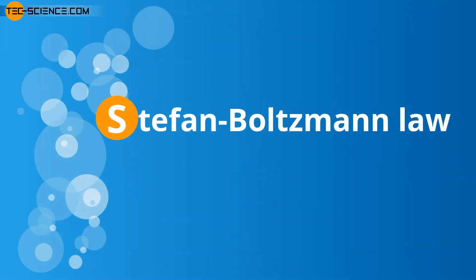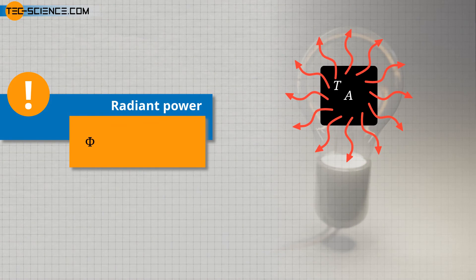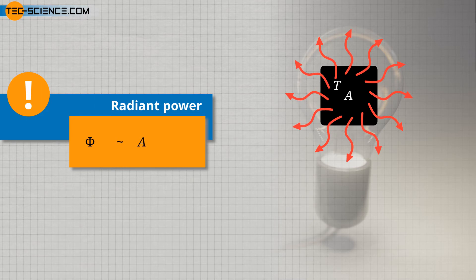Besides the temperature, the area of the surface of the radiating body also influences the radiant flux. The larger the surface, the more atoms can oscillate and emit radiation. Note that radiation emitted by the atoms inside the body is directly reabsorbed by the surrounding atoms. Thus only the atoms on the surface are relevant for the radiation of the electromagnetic waves. If the surface is twice as large, the radiant power should therefore be twice as high. More detailed studies by the physicists Joseph Stefan and Ludwig Boltzmann at the end of the 19th century showed that the radiant power is indeed directly proportional to the surface area of the emitting object. The influence of temperature on radiant power, on the other hand, is far greater — it increases with the fourth power of the absolute temperature.